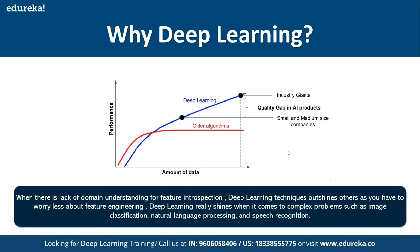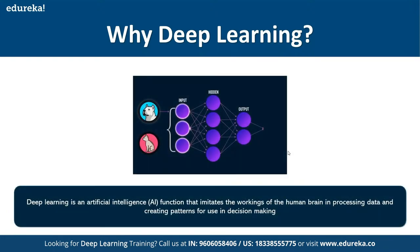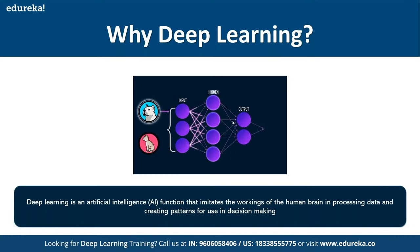Whenever someone talks about deep learning, you'll see a figure with an input, an output, and hidden layers in the middle. These three parts — input, hidden, and output — are the components of any deep learning neural network. Through the input layer we receive the input, computation happens in the hidden layers, and the output is displayed in the output layer.